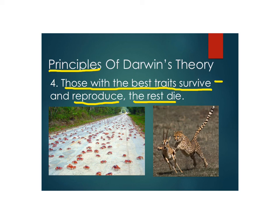Here's an example: a cheetah chasing an antelope. The faster antelope don't get eaten, or the antelope that hides doesn't get eaten. The cheetah that's faster gets to eat; the slower cheetah can't catch its food. Over time, the cheetahs got faster, and the antelopes got faster and smarter.